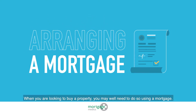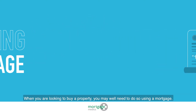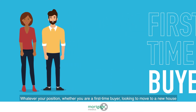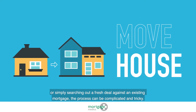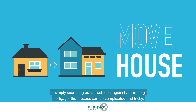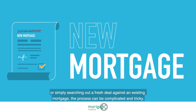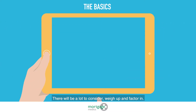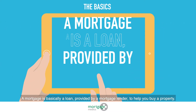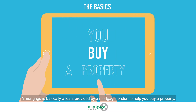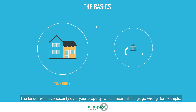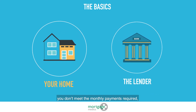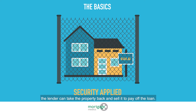When you are looking to buy a property you may well need to do so using a mortgage. Whatever your position — whether you are a first time buyer, looking to move to a new house, or simply searching out a fresh deal against an existing mortgage — the process can be complicated and tricky. There will be a lot to consider and weigh up. A mortgage is basically a loan provided by a mortgage lender to help you buy a property. The lender will have security over your property, which means if things go wrong — for example, you don't meet the monthly payments required — the lender can take the property back and sell it to pay off the loan.